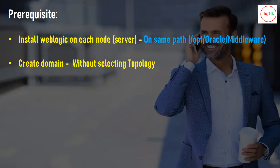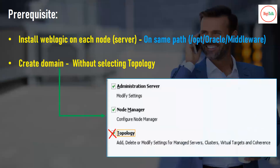Second, after the installation, when you go to create a domain, make sure to not select the option topology. When you get this screen during the configuration of the domain, you can select the admin server option if you want to modify the name or listen address of the admin server. You can also select node manager if you want to configure the username and password. But do not select topology — everything like creating node managers, machines, managed servers, and clusters will be done from the admin console.